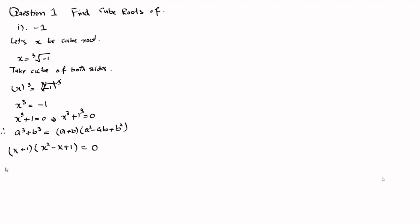Now from the zero product property, we can write that x plus 1 is equal to 0, giving x is equal to minus 1.